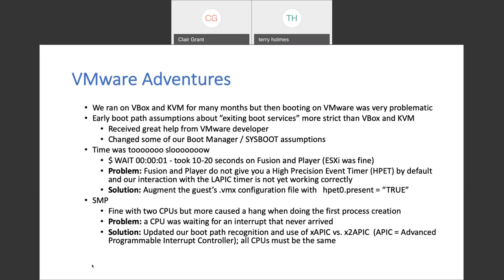In the SMP environment, we were good with two CPUs on VMware, but more than that the system hung. We ultimately discovered a CPU was waiting for an interrupt that never happened. During our boot path recognition of CPUs and the APIC, some CPUs thought they were on APIC and others on X2APIC. The fix was to make all CPUs talk the same language. Surprising how long it can take to figure things like that out — but those are just some recent adventures with VMware.